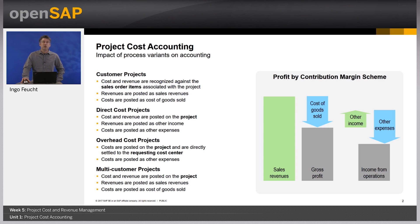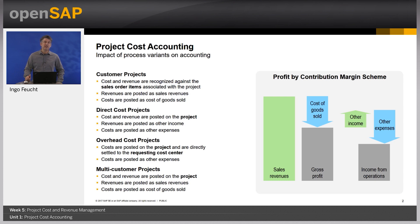Overhead cost projects are only for internal purposes. An important difference from direct cost projects is that revenues cannot be posted at all, and all costs that incur on an overhead cost project are automatically settled to the requesting cost center. So the balance of overhead cost projects is always zero. The main purpose of overhead cost projects is to have an object that helps keep track of certain activities within a cost center — for example, a marketing department tracking costs for a marketing campaign or event. As the requesting cost center can be assigned to market segments, the costs are also indirectly available in profit analysis reporting, posted as overhead costs.